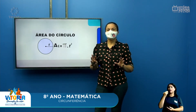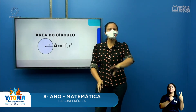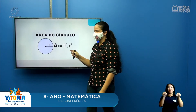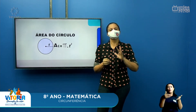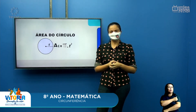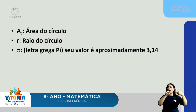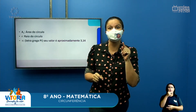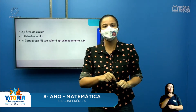Tive um professor que me ensinou assim para memorizar: 'dois pi R ao quadrado'. Nunca mais me esqueci. E até hoje eu passo para os meus alunos. Então: AC é a área do círculo, R é o raio do círculo, e pi é a nossa famosa letra grega cujo valor é igual a 3,14. Toda vez que você ver pi, já sabe: pi vale 3,14.